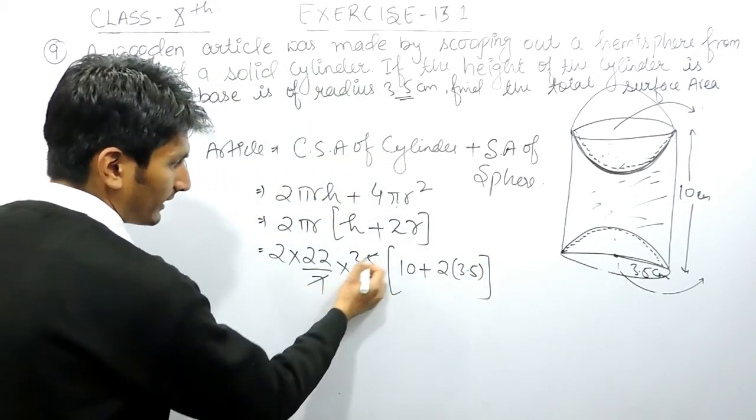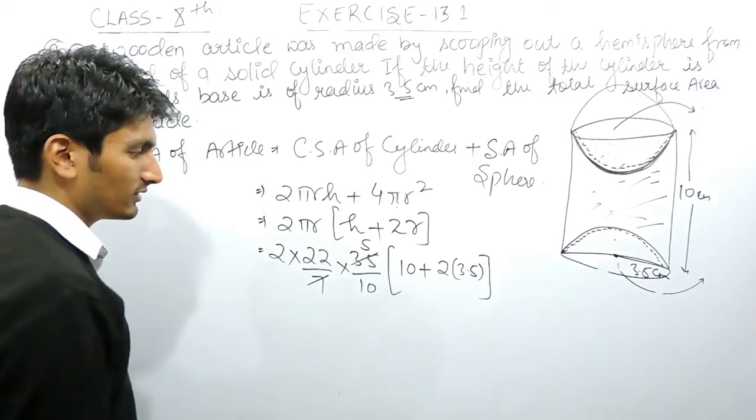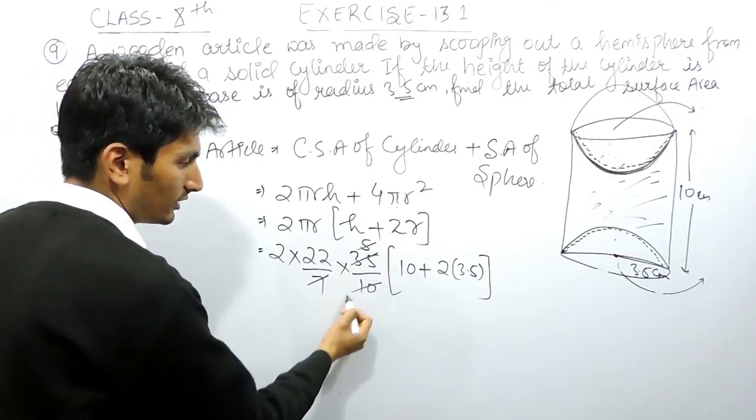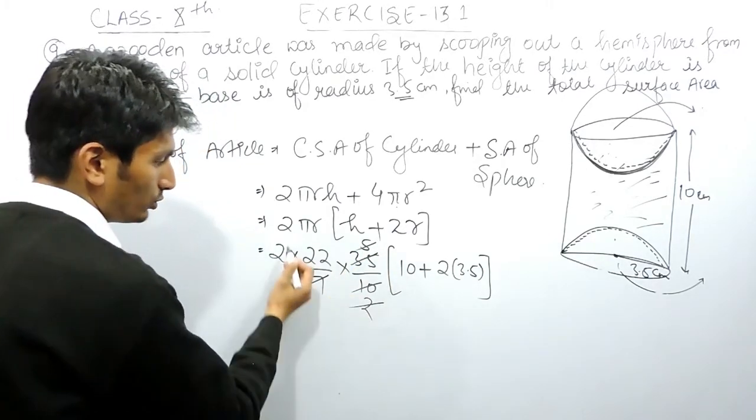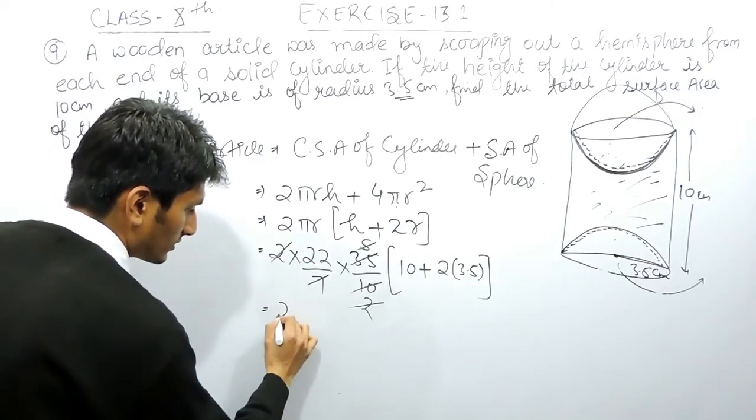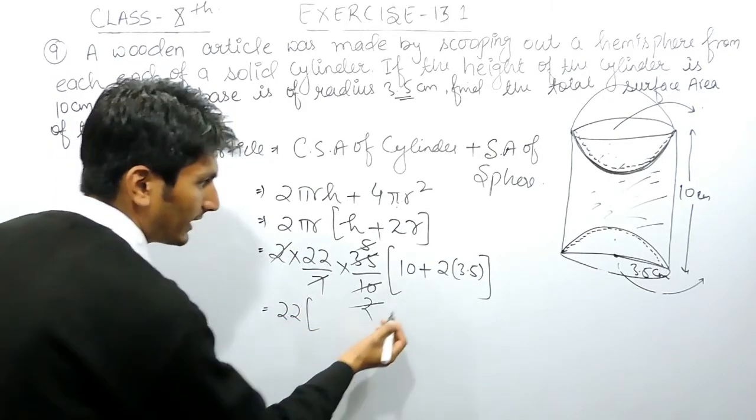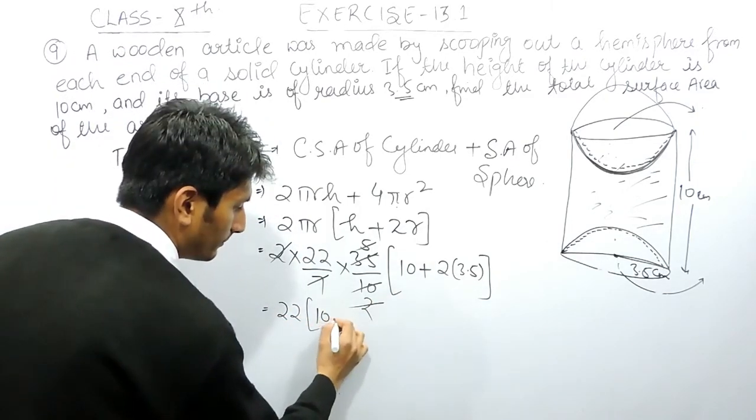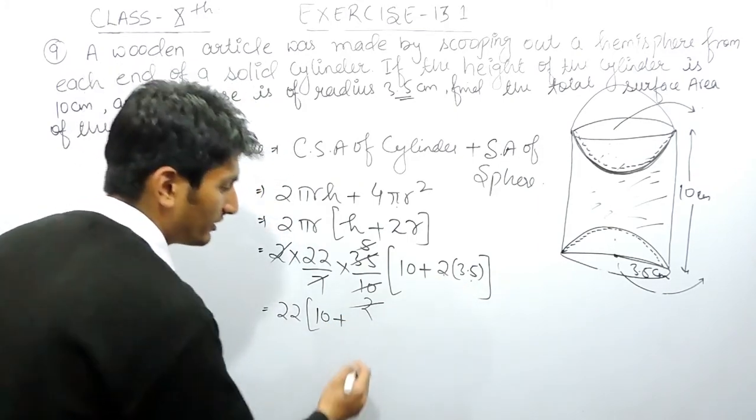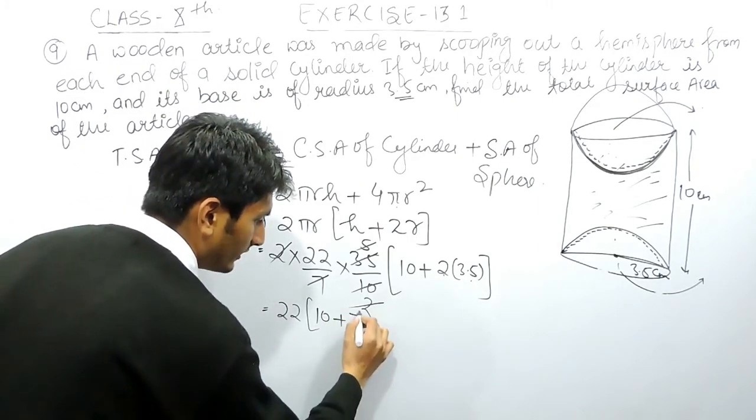And this is 2 multiplied by 3.5. Now, this can be cancelled 5 times. 5, 7, 35. This can be cancelled 2 times. And 2 can be cancelled with 2. This will be 22 multiplied by 10 plus 3.5 multiplied by 2 is 7.